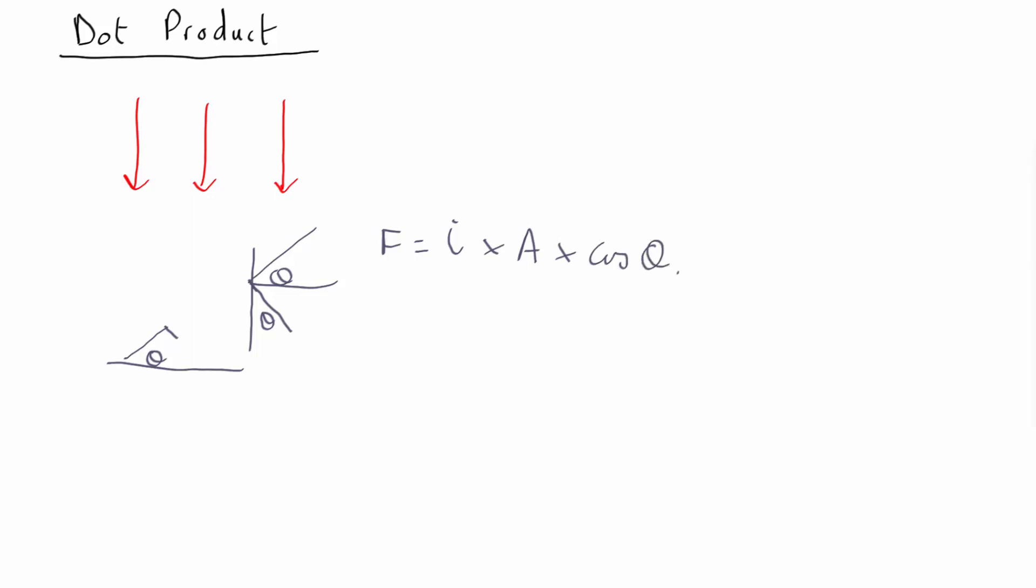Now it turns out there's a very useful mathematical trick for working this out, which is using the dot product and something called the normal vector. This is how it's actually normally done in practice—it makes things much easier.